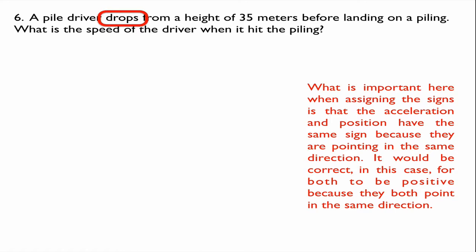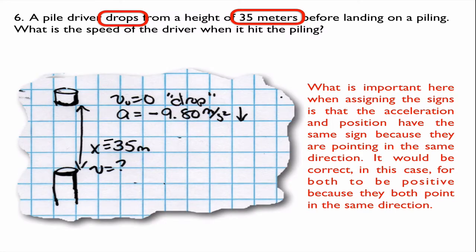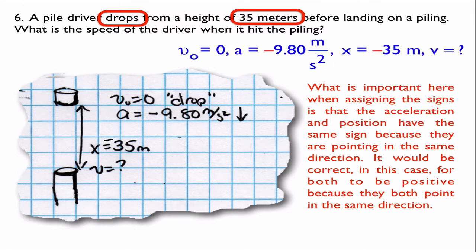The pile driver drops — the word 'drop' implies two givens: initial velocity is zero, and acceleration is downwards at 9.8 meters per second squared due to gravity. The other given is 35 meters — that's a distance, how far it travels. So x is negative 35 because it goes down. My list of givens: initial velocity is zero, acceleration is negative 9.8 meters per second squared, distance is negative 35 meters, and final velocity is the unknown I'm looking for. x-naught equals zero is always assumed in our problems.